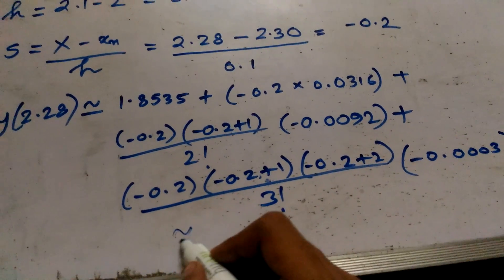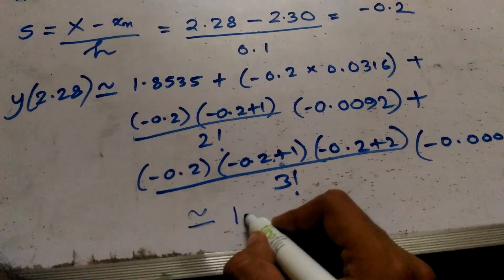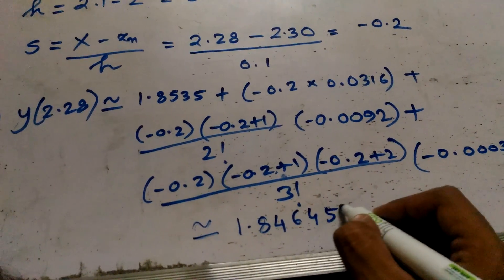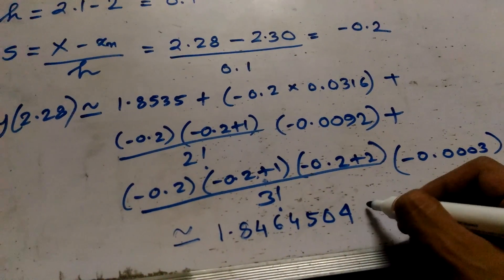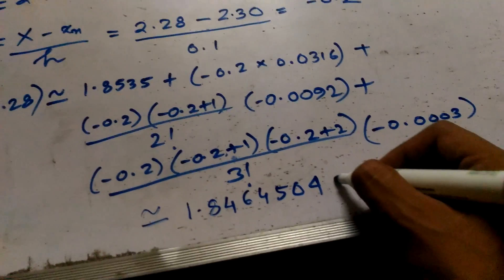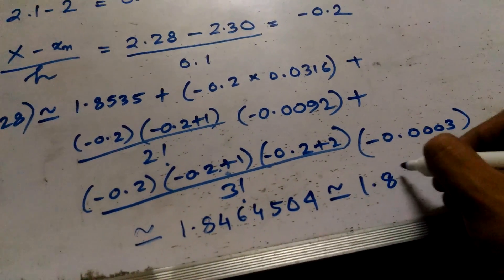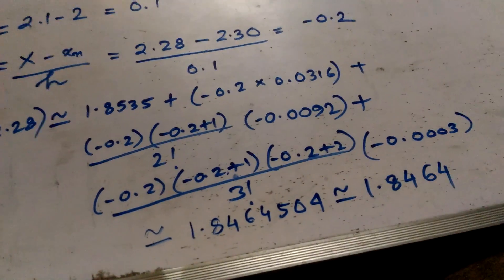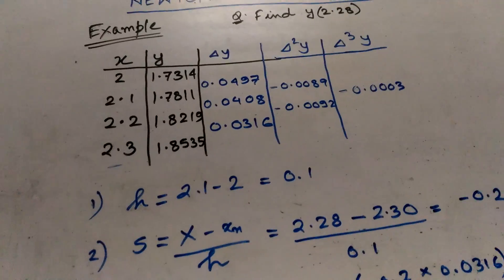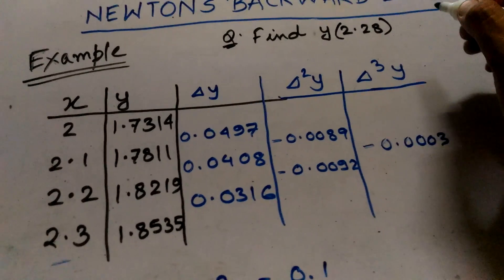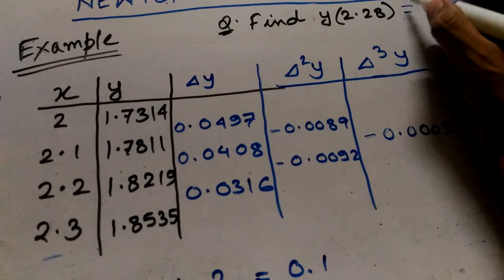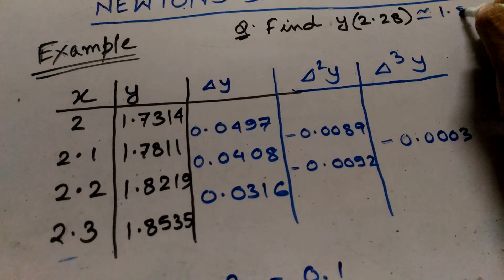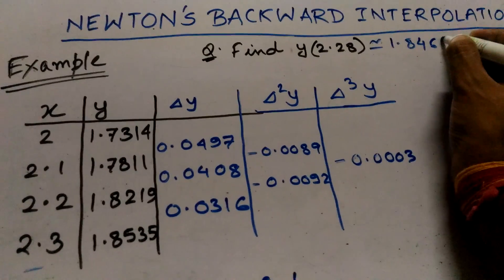This is approximately equal to 1.8464504, which we can round to 1.8464. So finally, y(2.28) ≈ 1.8464.